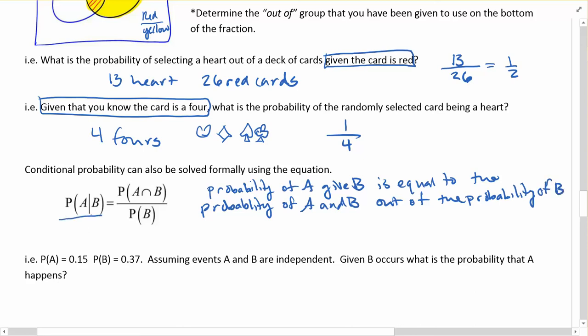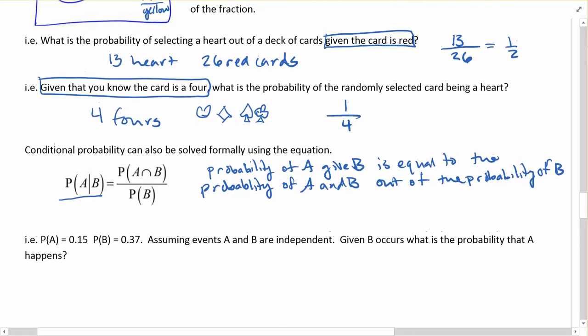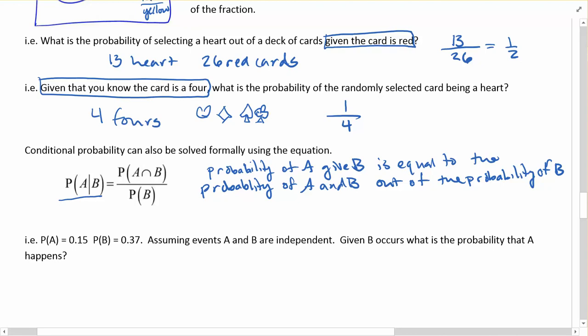So A given B, probability of A and B divided by the probability of B, which is kind of basically what we've got here. What we're looking at here is the probability of it being a heart, given that it is a 4. So this becomes the A and this becomes the B. So the probability of being a 4 was 4 out of 52, and the probability of being a heart in that case.